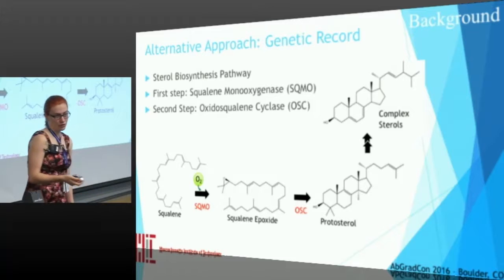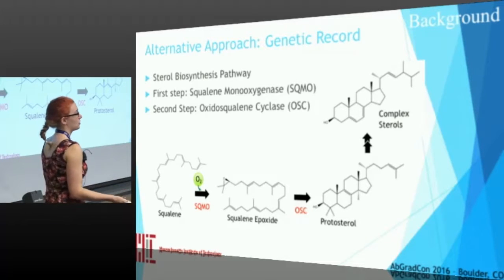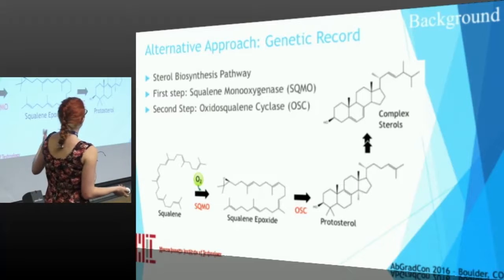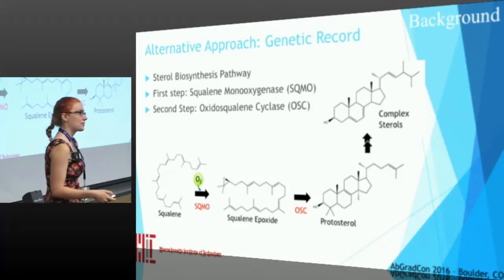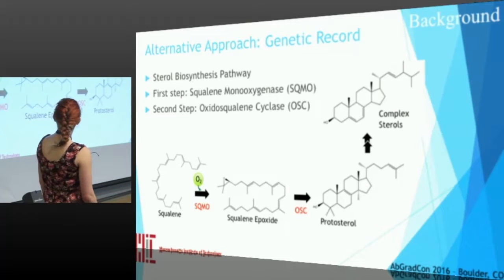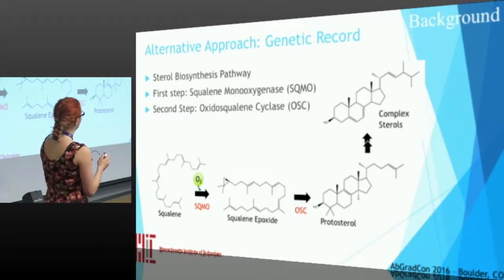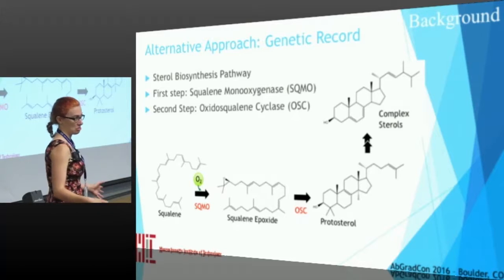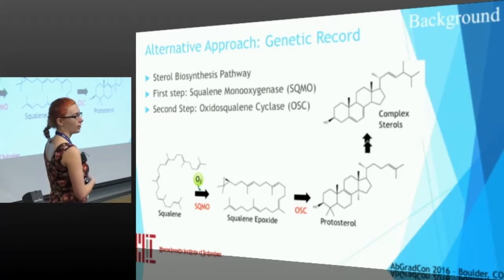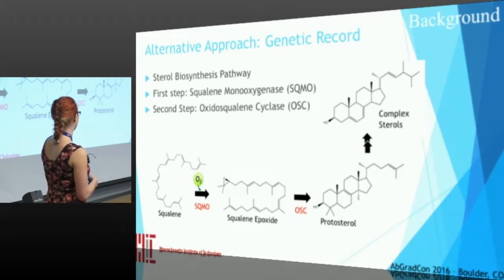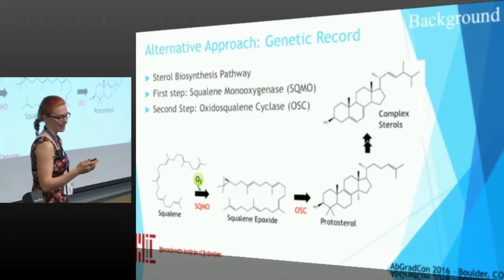So we decided to take an alternative approach and look at the genes of modern organisms to try to figure out when this pathway evolved from the genetic record. The first thing we had to do was pick two genes to study. We decided to pick the first two genes in the sterol synthesis pathway because they are conserved across all sterol synthesis pathways, whereas some of the later genes are not. The first is squalene monooxygenase, which converts squalene to squalene epoxide. The second is oxidosqualene cyclase, which turns this epoxide into a protosterol such as cycloartenol.